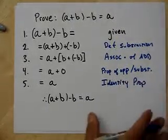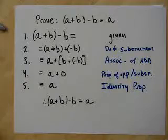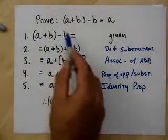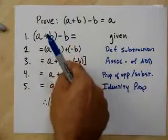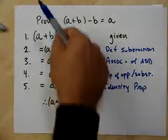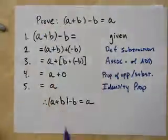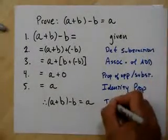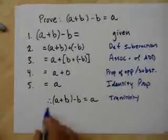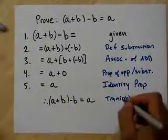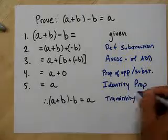And finally, we can say now, through transitivity, if this equals this, and this equals this, and this equals this, and this equals this, well, then that first thing equals the last thing through transitivity. And therefore, A plus B minus B is equal to A.